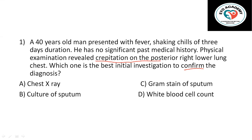What are crepitations? Crepitations are cracking, grating, or popping sounds that can be heard when certain tissues or structures in the body move against each other. For example, in arthritis — inflammation of the joint — you may hear crepitations. Also, in patients with lung problems like pneumonia, rubbing of the inflamed or damaged lung tissue can create a cracking or popping noise.